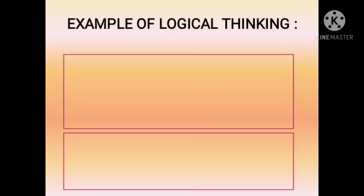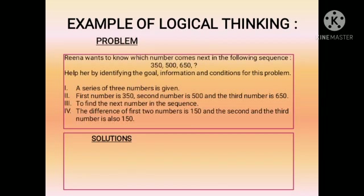Here is an example of logical thinking. There is a problem and we have to find the solution. Rina wants to know which number comes next in the following sequence. The sequence is 350, then 500, after that 650, and the next number you have to find out. We are going to help her by identifying the goal, information, and condition for this problem.